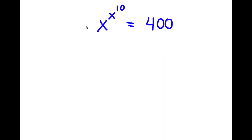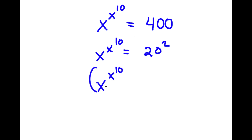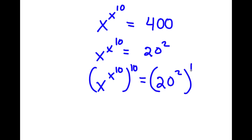So in this problem, I have x to the power of x to the power of 10 is equal to 400. To start, I'm going to rewrite 400 as 20 squared. And now I'm going to take the power of 10 on both sides. So now I have x to the power of x to the power of 10, to the power of 10, is equal to 20 to the power of 2 to the power of 10.